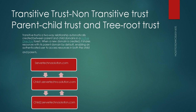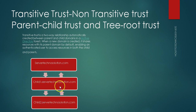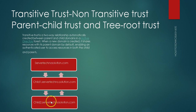This trust flows down automatically. So after promoting child1.servertechnosolution.com by default, when we then promote another domain — child2 — the trust flows to it without any additional configuration. That automatic flowing of trust is what we call transitive trust, also known as parent-child trust.